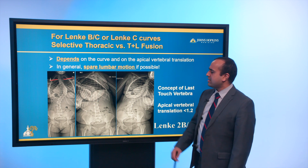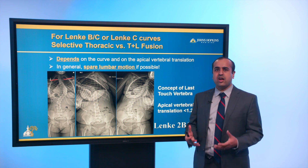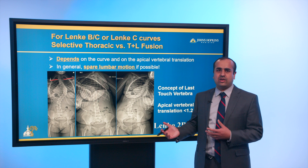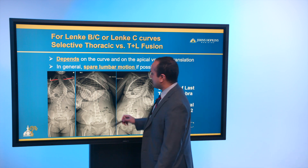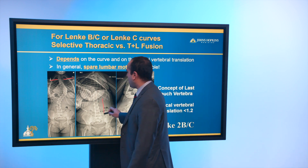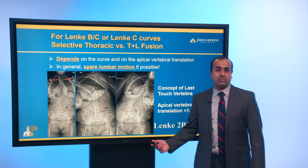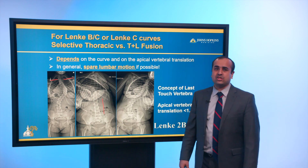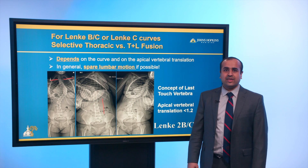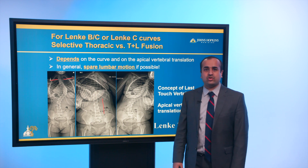As far as the lumbar spine is concerned, that's even more important — it's really important to know how it's going to bend out. Luckily for us, this child bent out quite a bit. On her left bender, you can see the lumbar spine is actually pretty straight. On the right bender, of course, that curve is accentuated. So that tells me the lumbar spine is fairly flexible and may not necessarily need to be addressed surgically.